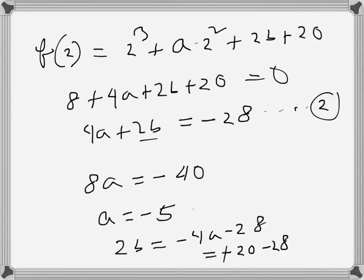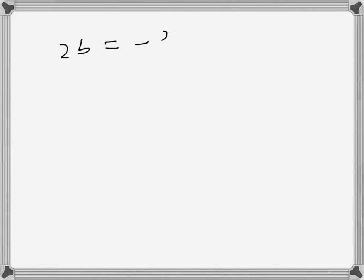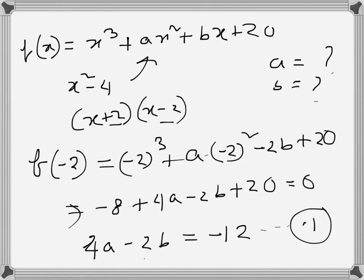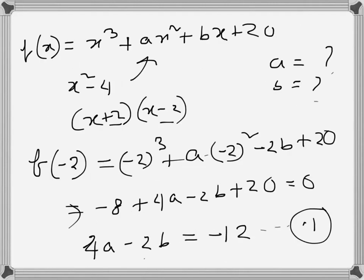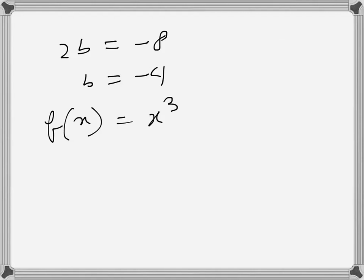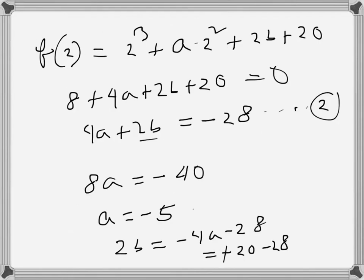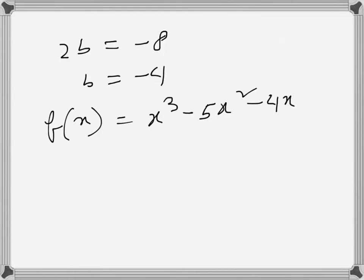So 2b = -8 and b = -4. We have a = -5 and b = -4. Now the polynomial becomes x³ - 5x² - 4x + 20. We know (x+2)(x-2) divide it, so we need to find the third factor using trial and error.